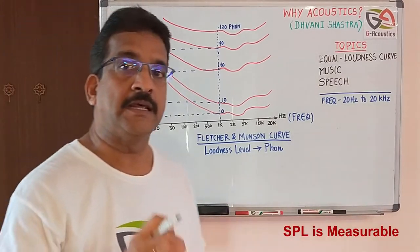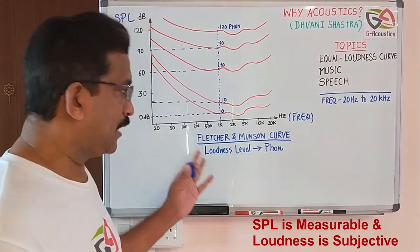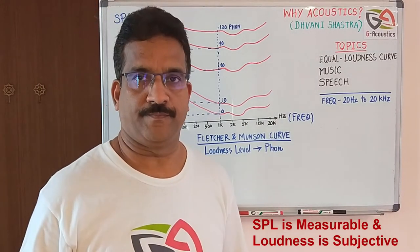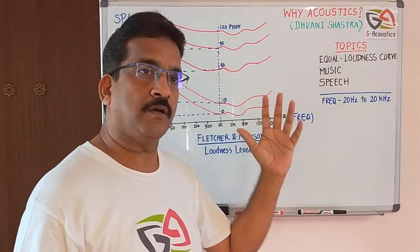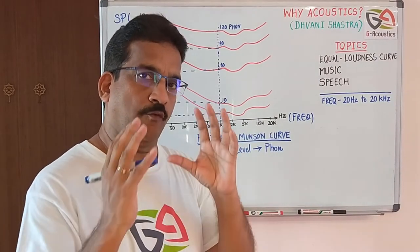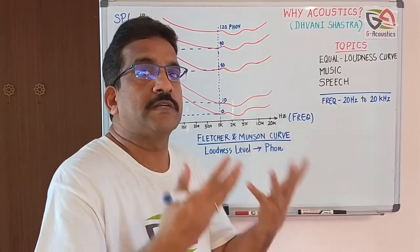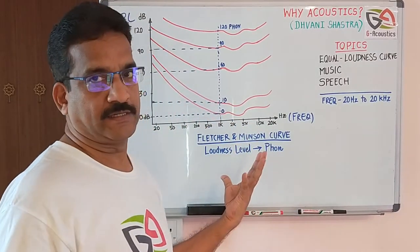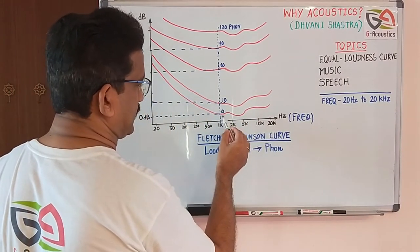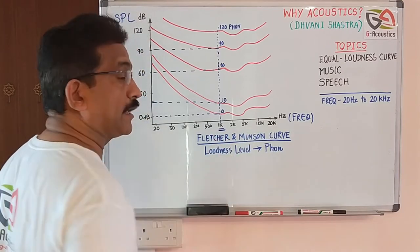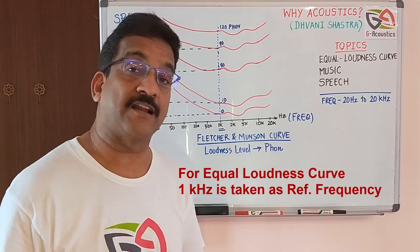Sound pressure level is a measurable, physical entity, while loudness is subjective. This graph tells us about the actual sound pressure level of the measured entity and how our ears are going to respond in terms of loudness. For the equal loudness curve, one kilohertz is taken as the reference frequency.